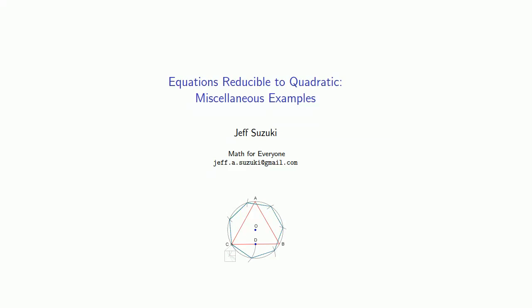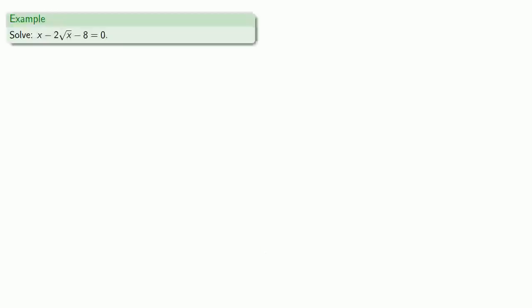So let's take a look at a few more equations reducible to quadratics. Let's try to solve x minus 2 square root of x minus 8 equals 0. So again, there's no algorithm, no formula, no set of steps, no divine light shining down from the heavens that will tell us what the best substitution is. We just have to try out different things and see what works.